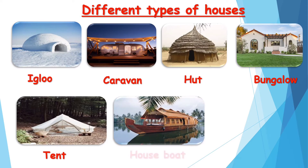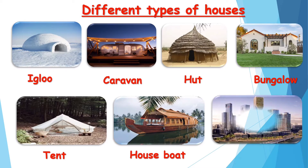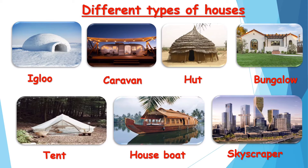Sixth is a houseboat. Seventh is a skyscraper. So children, as you can see, these are the seven types of houses which we have learned in the previous EVS session.